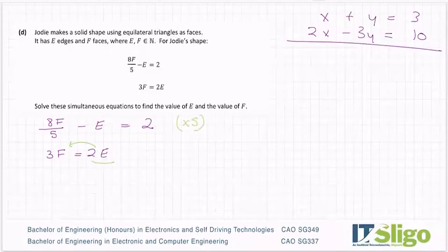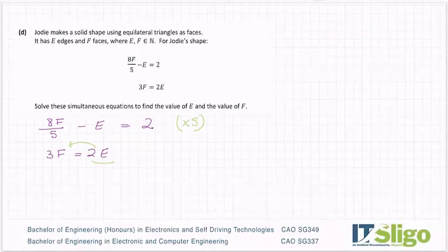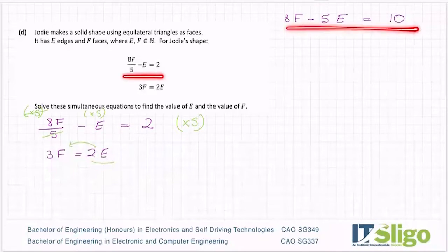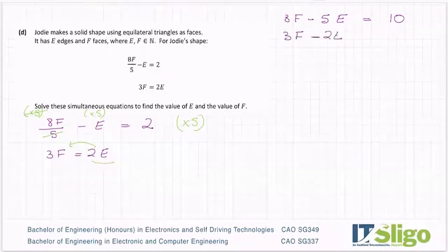Okay, multiplying the top equation by 5: 8F over 5 times 5 — the 5s cancel — gives 8F. Then 5 times E is 5E. Equals 5 times 2 is 10. So that looks better than the fraction. Then for the second equation, move the 2E over to get 3F minus 2E equals 0. That's looking a whole lot closer to the simultaneous equations we know and love.